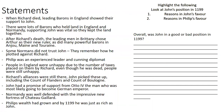When Richard died, leading barons in England showed their support to John. There were lots of barons who held land in England and Normandy, so supporting John was vital to keep the land together. However, leading men in Brittany chose Arthur as the new ruler, as did many powerful barons in Anjou, Maine and Touraine. Arthur was John's nephew, and many felt the nephew deserved to be king more than John, which could cause problems.